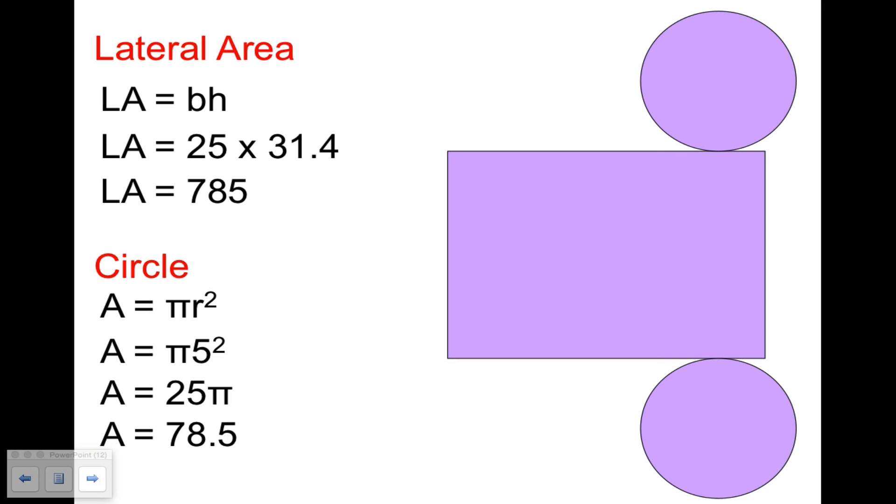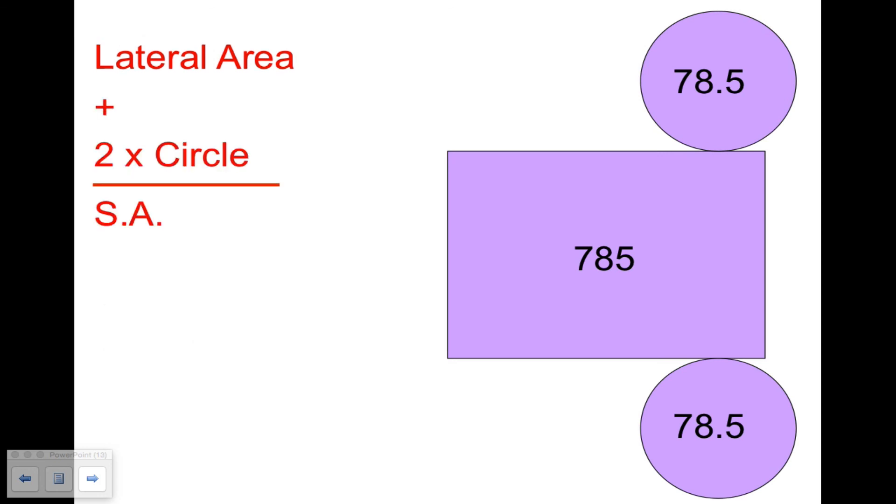Let's do that. The lateral area of 785, that 785 goes in the rectangle. The 78.5 is the area of both circles. And so to find the total surface area, we're going to add those three numbers together. The lateral area plus 2 times the circle equals the surface area. Lateral area was 785 plus 2 times 78.5, which equals 157. So add those together, we get the surface area is 942.